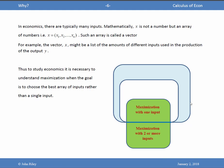For example, the vector x might be a list of the amounts of different inputs used in the production of the output y. If you're making fancy ice cream in an ice cream parlor, the inputs are the cream, the sugar, and lots of other inputs. So that's an economic problem, trying to understand what inputs to use to produce the output.